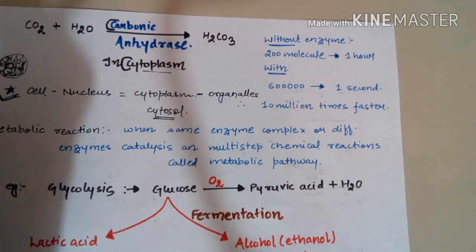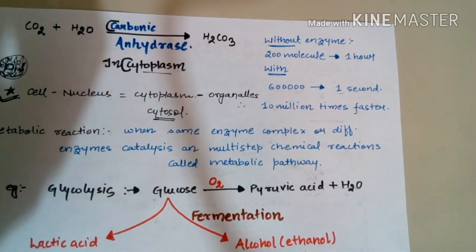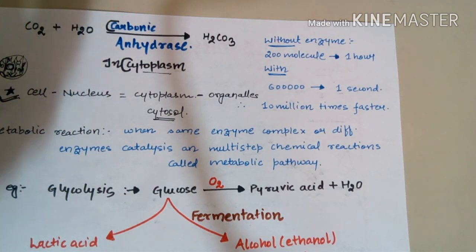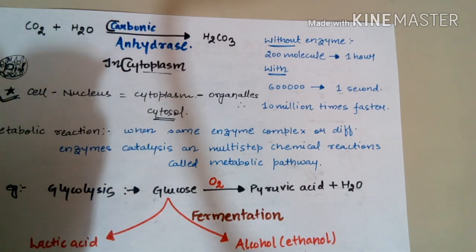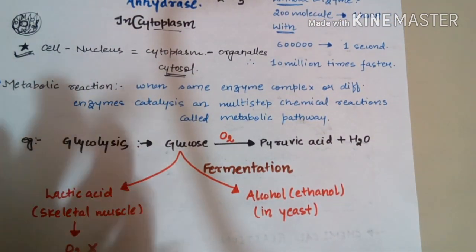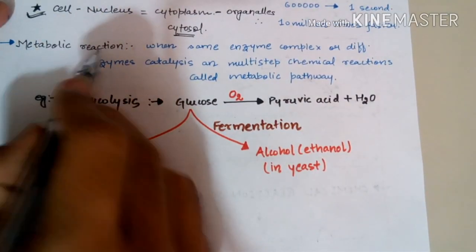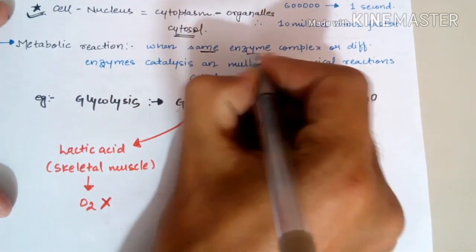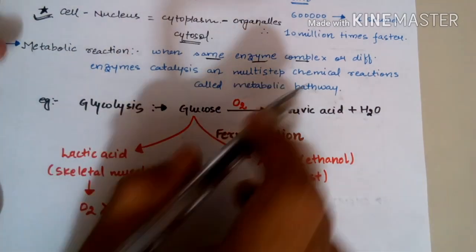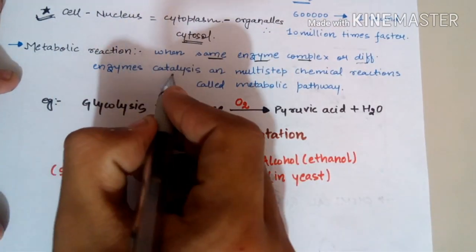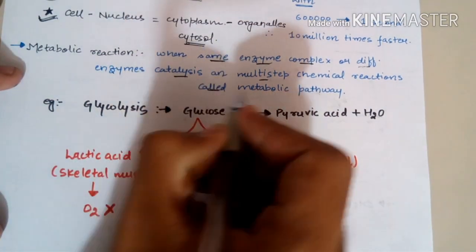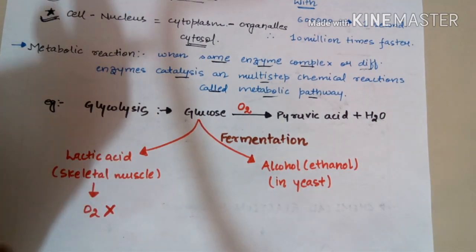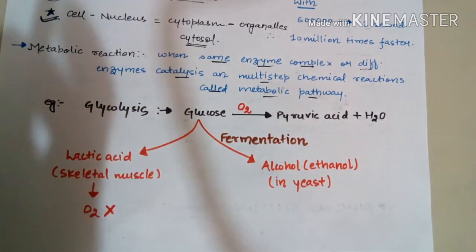We cannot realize the role of all the proteins and enzymes in our body — we are nothing without them. Metabolic pathways are defined as when enzyme complexes (same or different enzymes) catalyze a multi-step chemical cascade. The individual reactions in that pathway are called metabolic reactions.